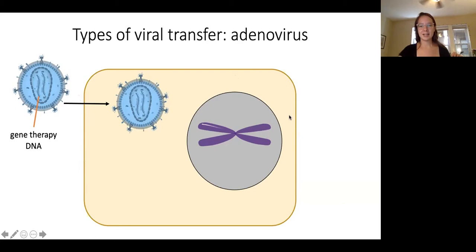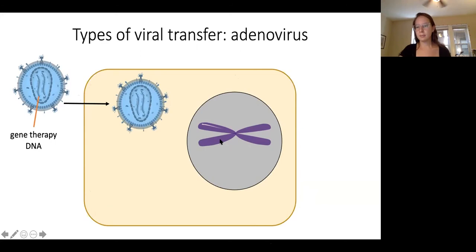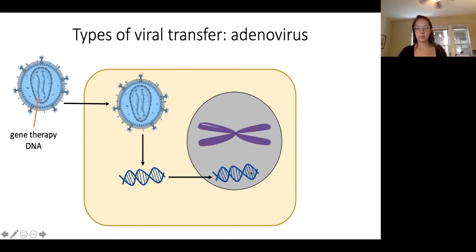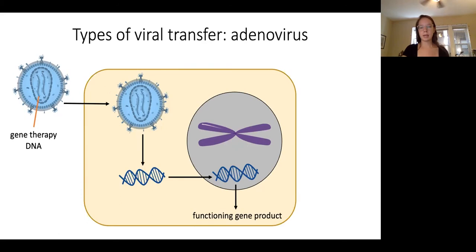Based on the adenovirus life cycle, the virus goes into the cell and releases its genetic material — the gene therapy DNA you've engineered. This genetic material goes into the nucleus, where it can be transcribed and translated into a functioning gene product, with the goal of that gene product fixing whatever issue the person has in their cells. This is the first form of viral transfer.